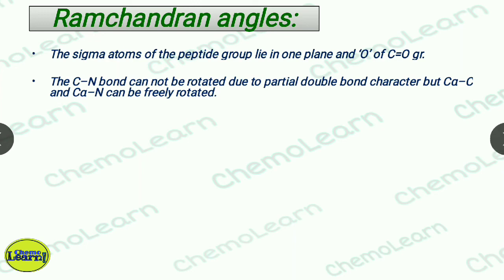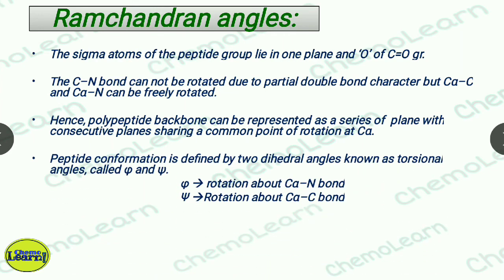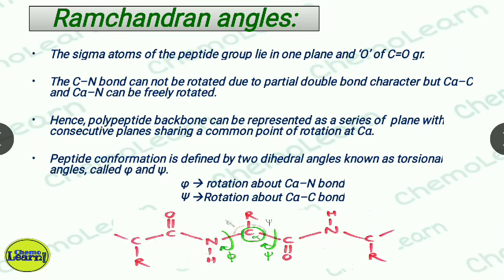In the polypeptide backbone, we have planes connected at C-alpha positions which serve as common rotation points. Two dihedral (torsional) angles are defined: phi and psi. Phi indicates the rotation about the C-alpha to N bond, and psi indicates the rotation about the C-alpha to C bond. From the figure, we can see the rotation of phi and psi for C-alpha. These two angles are the basis for Ramachandran plots, which will be covered in higher classes.